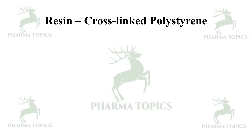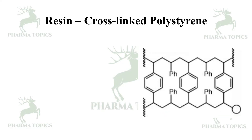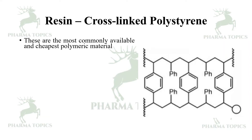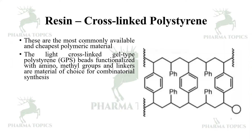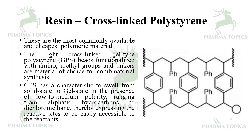Cross-linked polystyrene resins are the most commonly available and cheapest polymeric material. The light cross-linked gel-type polystyrene, that is GPS beads, functionalized with amino and methyl groups and linkers, are the material of choice for combinatorial synthesis. GPS has the characteristic to swell from solid state to gel state in the presence of low to medium polarity solvents, ranging from aliphatic hydrocarbons to dichloromethane, thereby exposing the reactive sites to be easily accessible to the reactants.